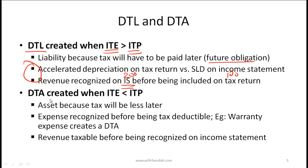A deferred tax asset is created when income tax expense is less than income tax payable. That means we are paying a higher tax now relative to what we think we should pay, which means we are reducing taxes in the future. Since in the future we will have a lower tax bill, that's a benefit and hence recorded as an asset — specifically called a deferred tax asset, or DTA.